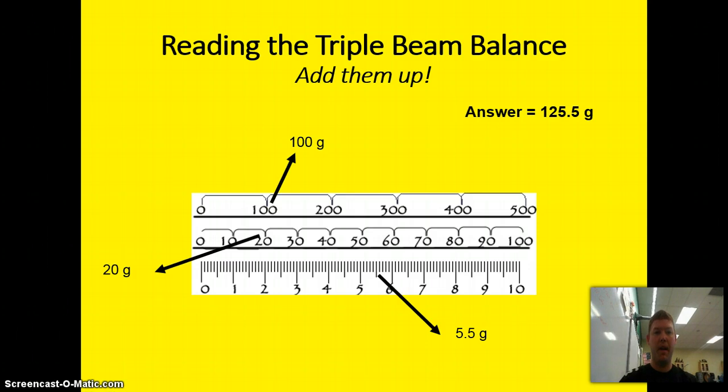Reading the triple beam balance, it's pretty easy. You add them up. For example, here, if your weight was right here, and this is a little bit different than the one we just saw, this would be 100 if it was there. That's 20, so that's 120. And what if our little one was right here? Right where that arrow is, that's 5.5. When you add them up, that's 125.5 grams. That's how simple it is to use a triple beam balance.